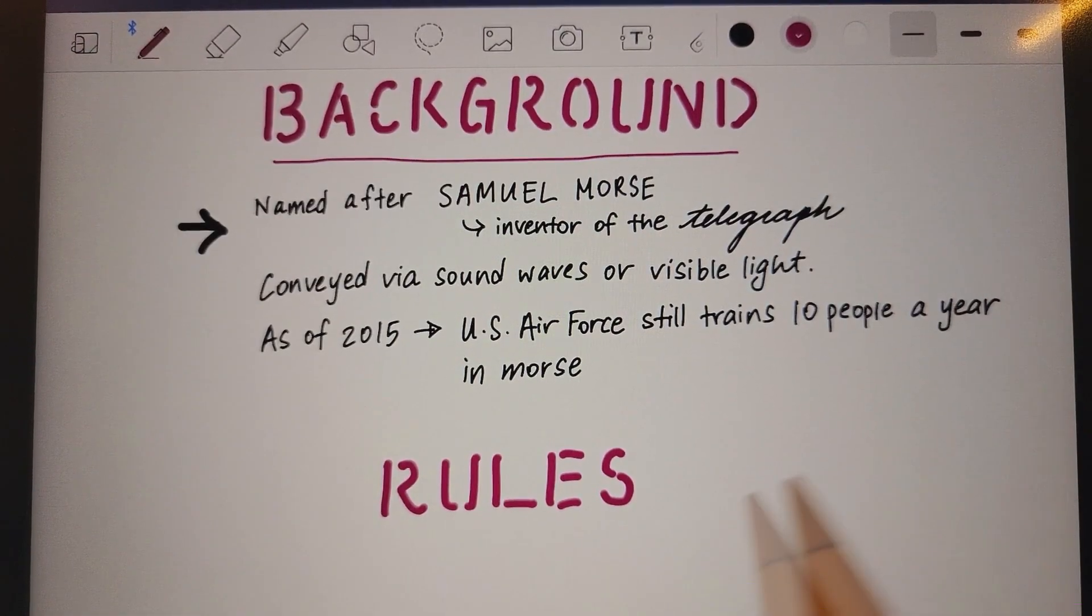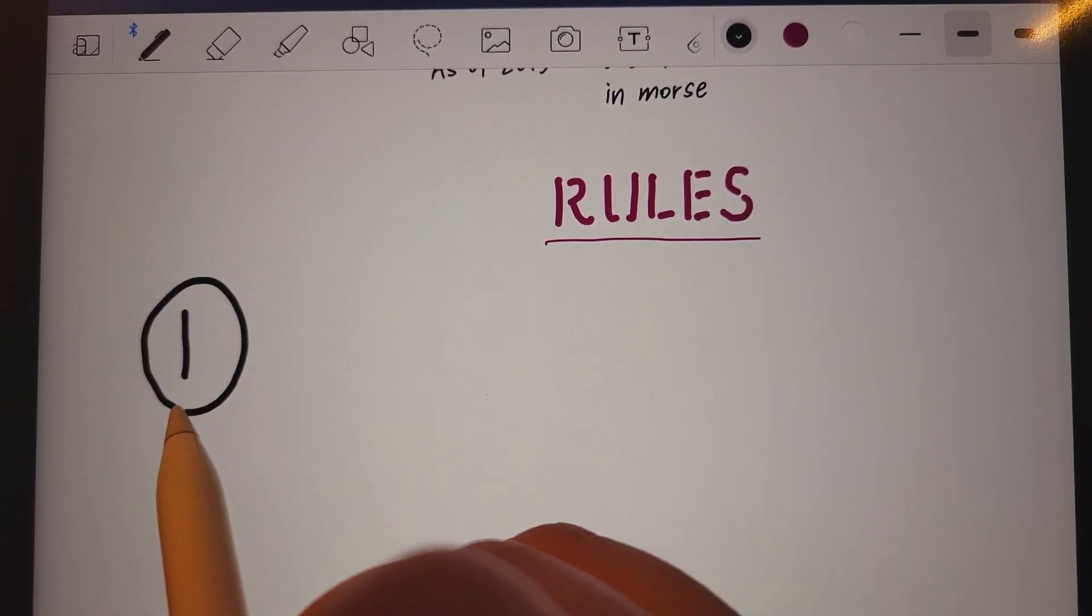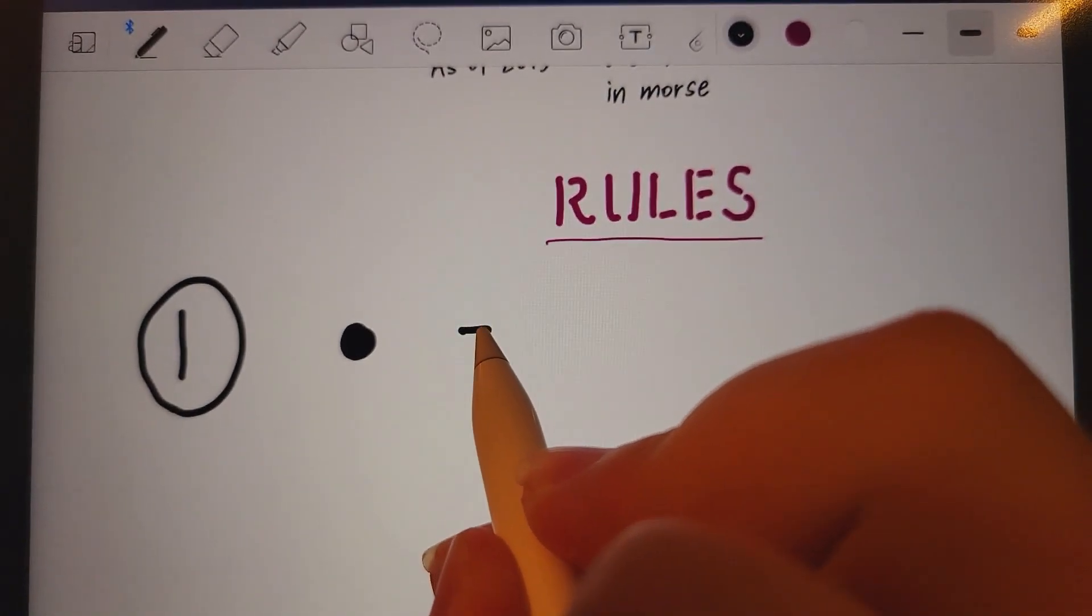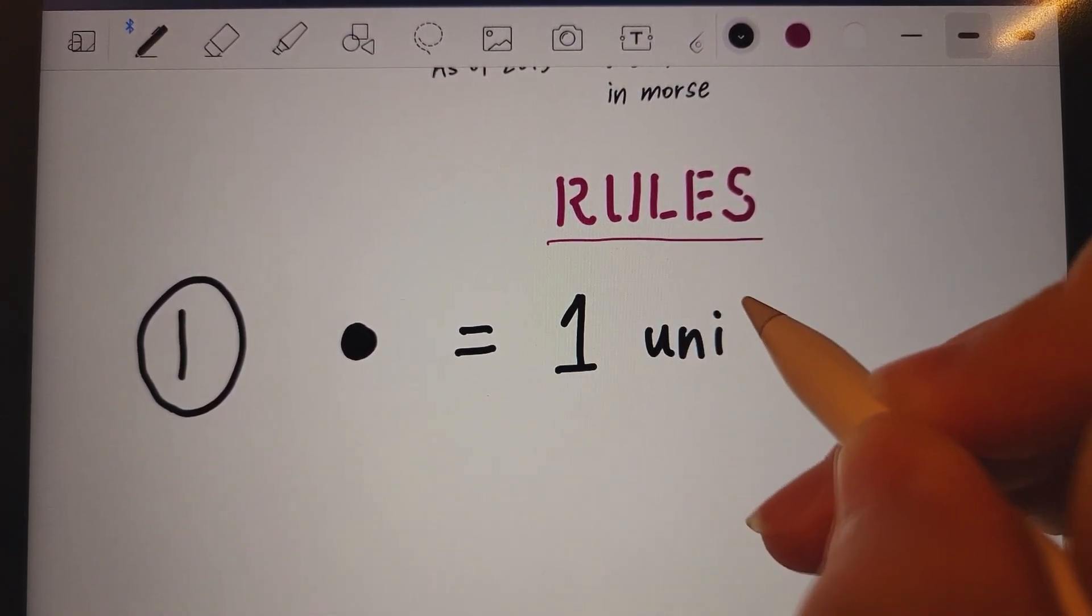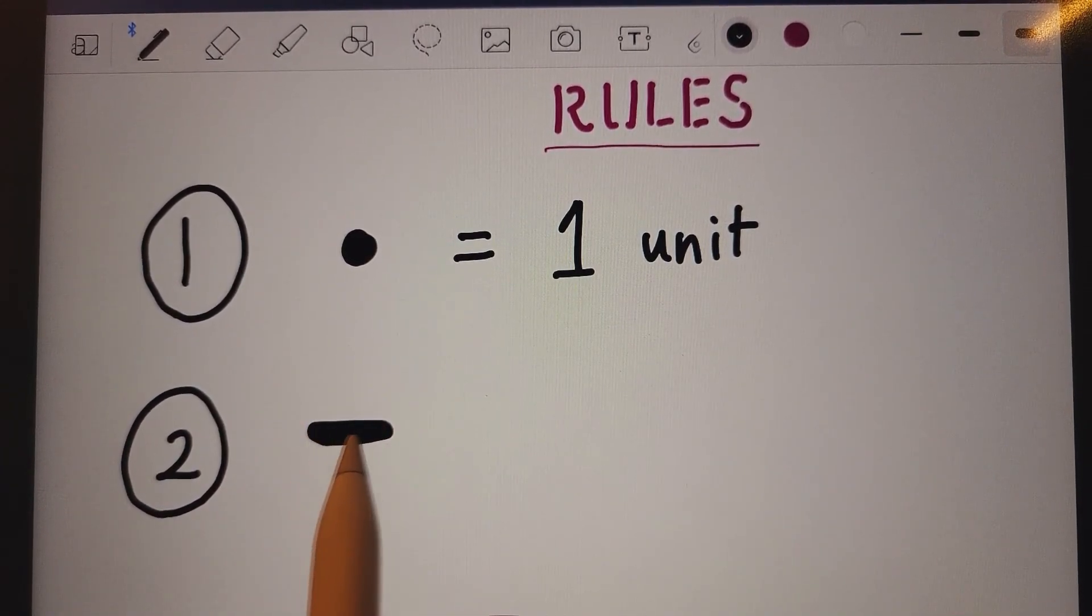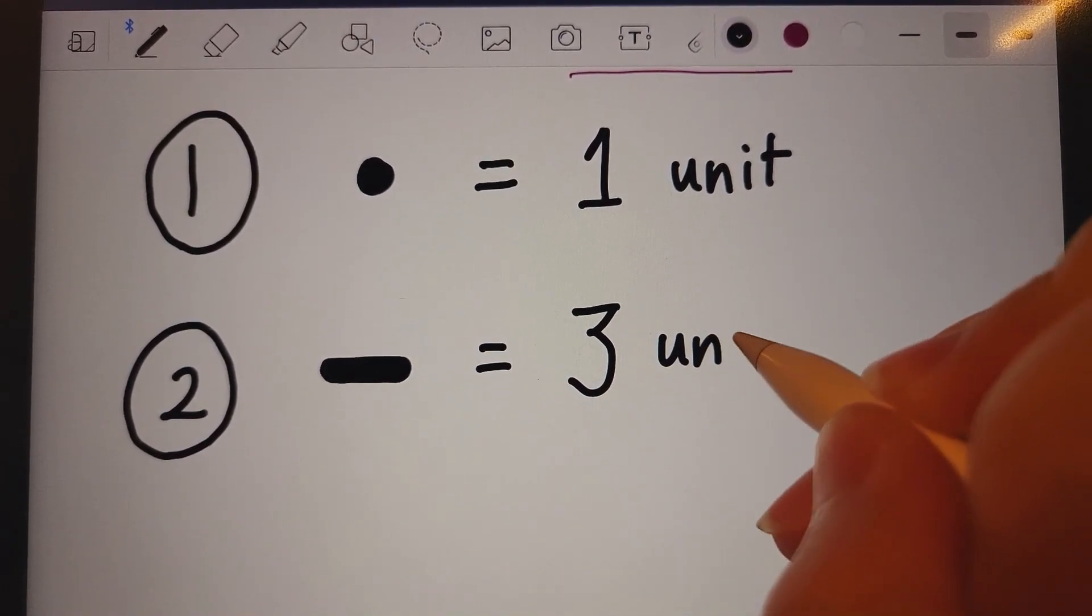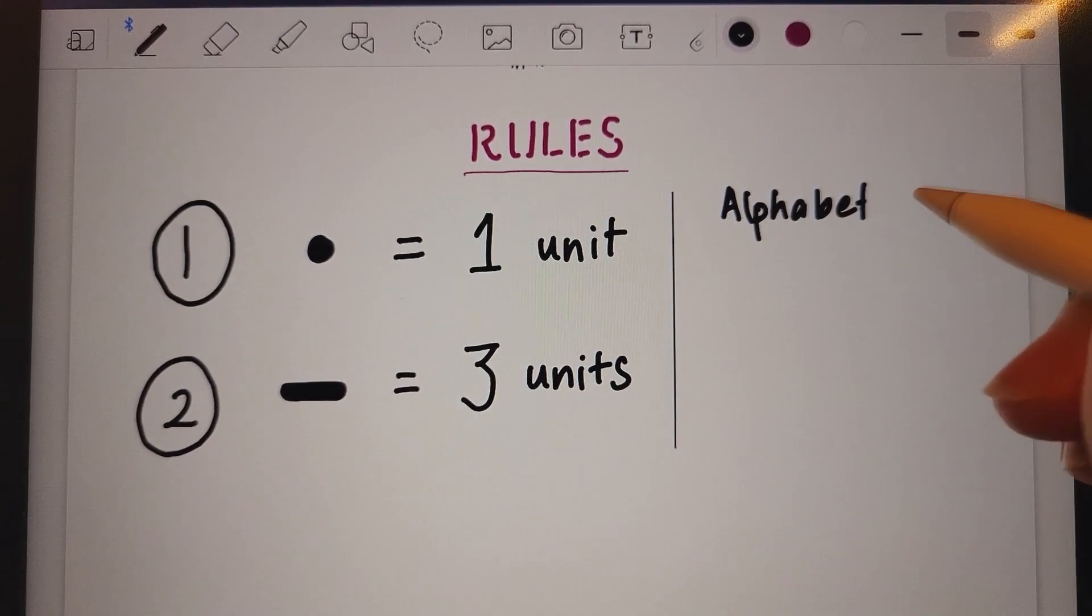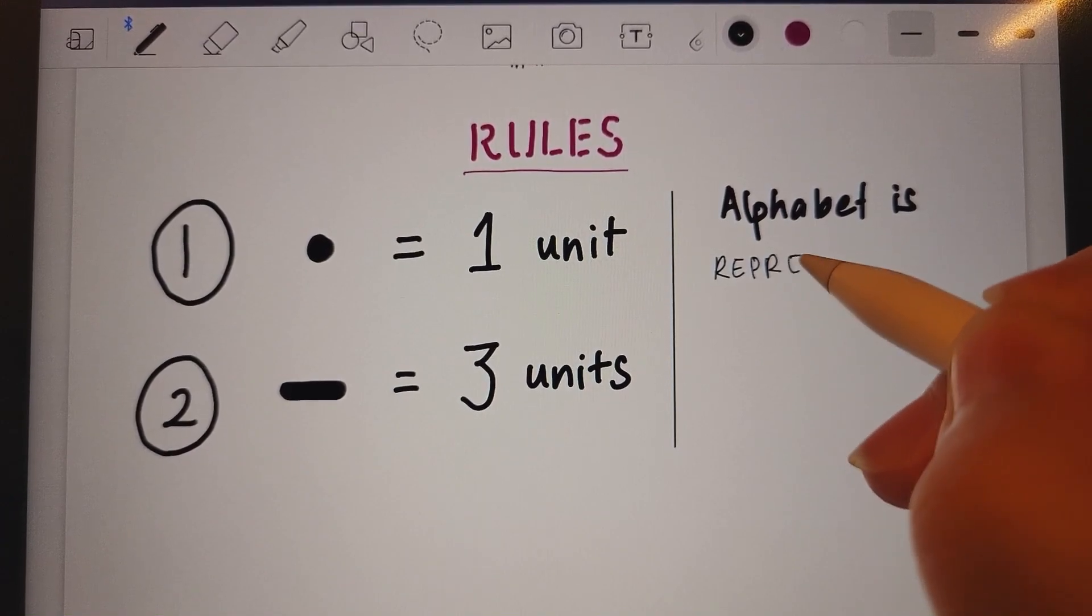So, now going over some basic rules of Morse code that you must follow. Number one, a dot in Morse code is equal to one unit, sort of like a time unit. Number two, a dash is equivalent to three units. Morse code is basically made...